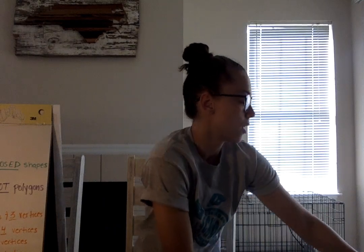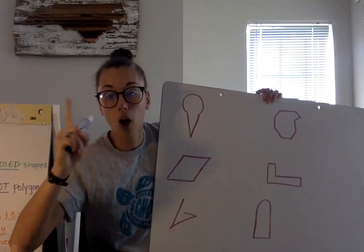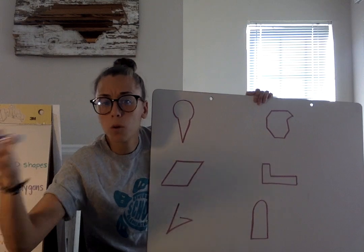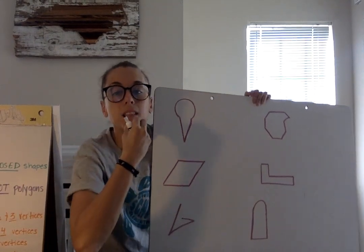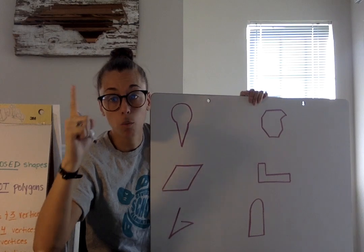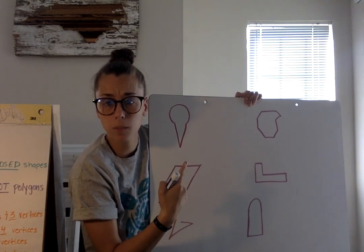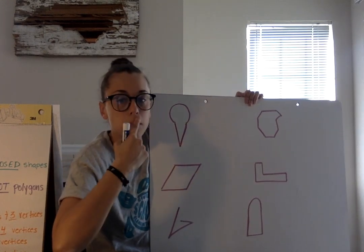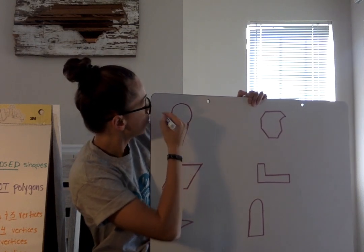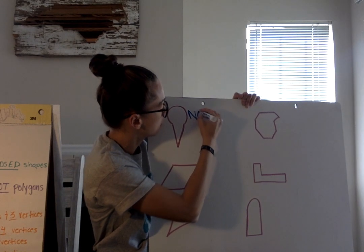I have some shapes drawn here and we need to figure out: are they polygons? And once we figure out they're polygons, we need to classify them — are they triangles, hexagons, nonagons? Let's look at this first one. Remember, in order for a shape to be a polygon, two things need to happen: it has to be a closed shape with all sides touching, and there can be no curves. This one looks like an ice cream cone to me — it has a giant curve up at the top, so it is not a polygon.